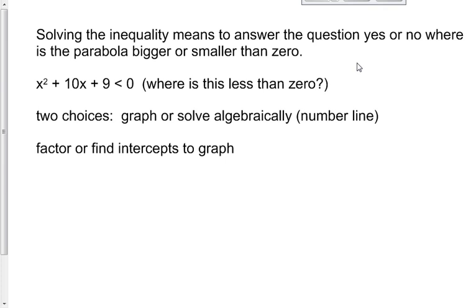The second half to section 4.9 is about solving an inequality, which means we need to answer the question yes or no, where is the parabola bigger or smaller than 0? So in this first example, x² + 10x + 9 < 0. We need to solve this, answering the question where is this inequality less than 0? Where is it negative?